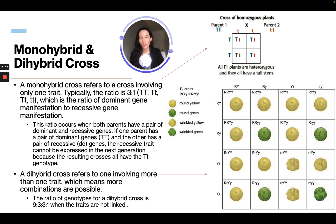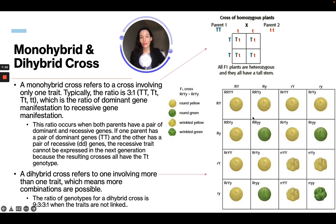A dihybrid cross refers to one involving more than one trait, which means more combinations are possible. Now we're looking at pea plants that are round and yellow, round and green, wrinkled and yellow, or wrinkled and green — looking at round versus wrinkled and yellow versus green. With two traits, the cross is no longer a simple four-cell square; we now have 16 different varieties. The ratio of genotypes for a dihybrid cross is nine to three to three to one.